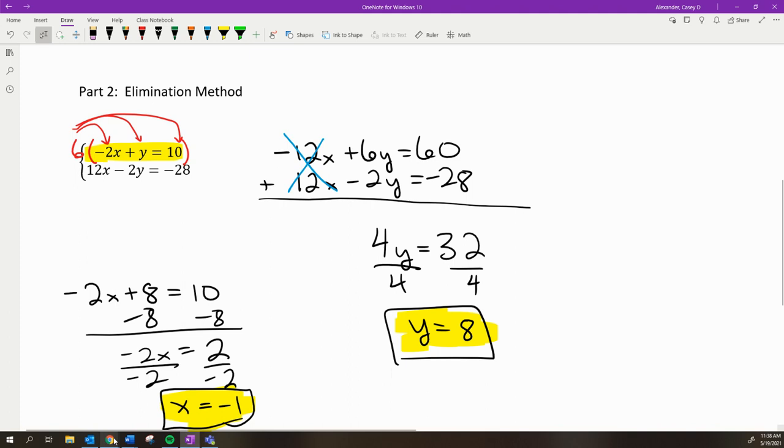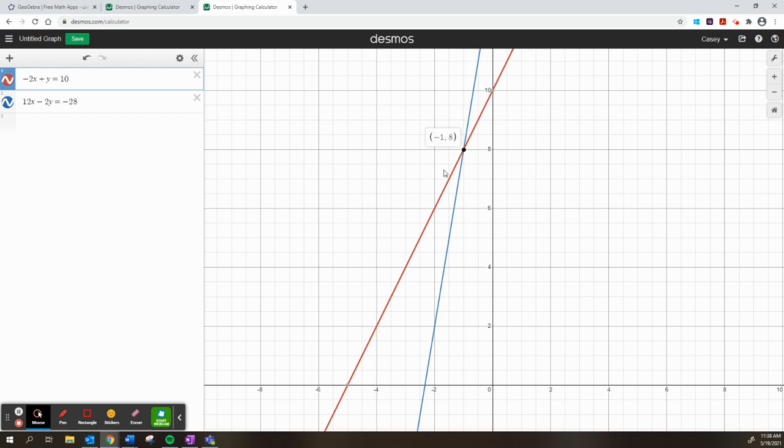manipulate one equation by multiplying all three terms by a number so when I add them, the x terms cancel out. You can always check using Desmos - I typed it in and there it is: -1, comma 8.